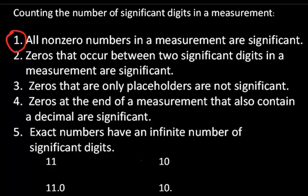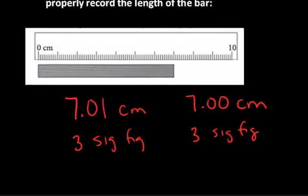Zeros at the end of a measurement that also contain a decimal are significant. And that would be similar to the case right here where we had 7.00. There's a decimal and they come after the decimal, so therefore they are significant.